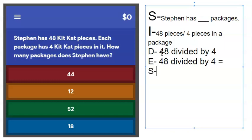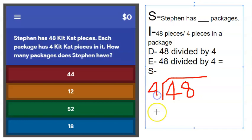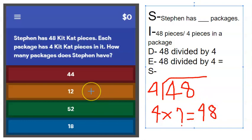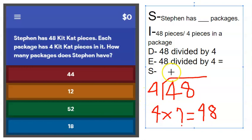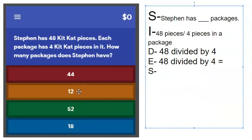How can we do 48 divided by 4? We can think of it as 4 times what equals 48. Looking at the answer choices, it can't be 52 because that's bigger than 48, can't be 44. It's between 18 and 12. Four goes into 4 once, four goes into 8 twice, so the answer is 12. That makes sense because he's taking a large amount of Kit Kats and putting them into smaller packages.